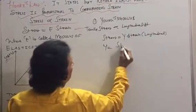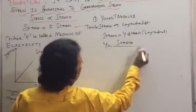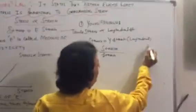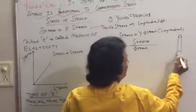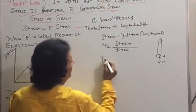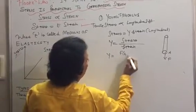So Y is what? Stress upon strain. If there is a wire and we apply a force F on the area of cross section A, then Y equals stress, which is F upon A, divided by strain.